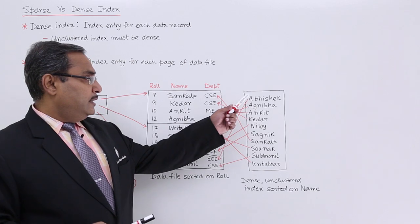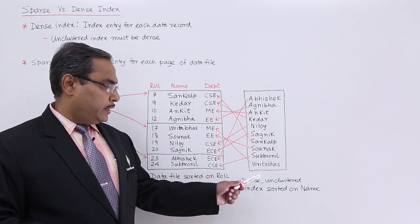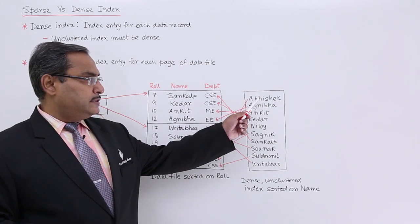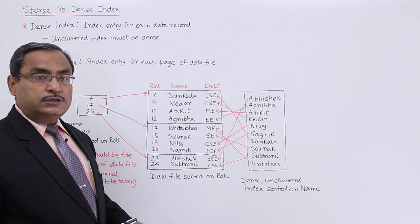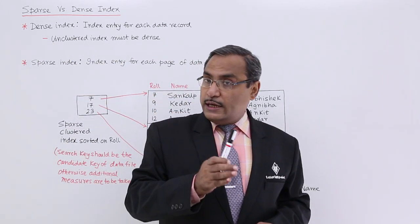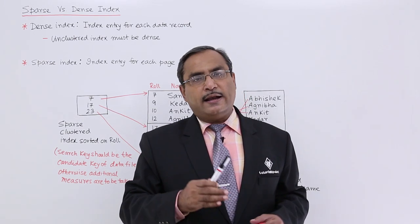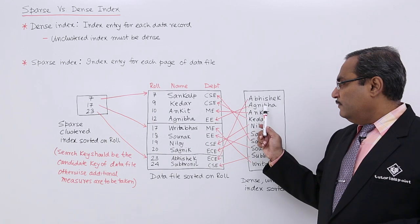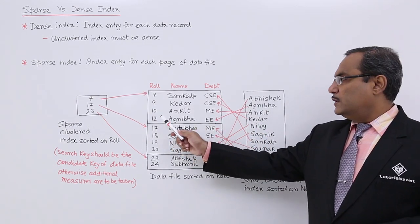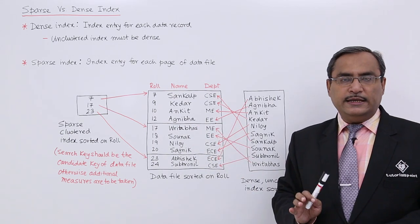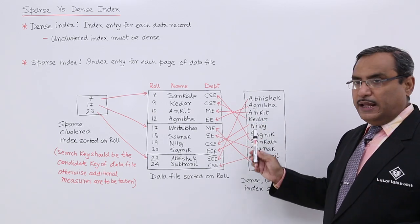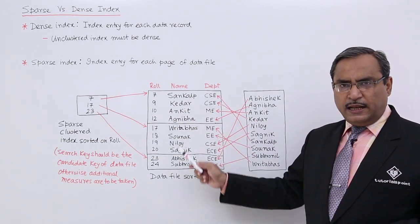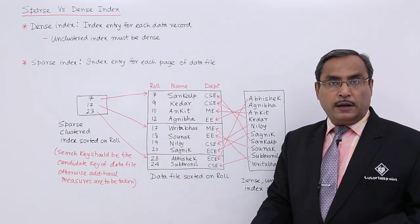In case of dense index, they are sorted alphabetically. This is a dense unclustered index sorted on name — it is unclustered because the order in which names are sorted is not the same order as the records in the data file. Abhishek is pointing to his respective record, Agnivo is pointing to his respective record with roll number 12 in electrical engineering, and so on. All names are sorted in the index, but the data file is sorted according to roll number, which is the candidate key.